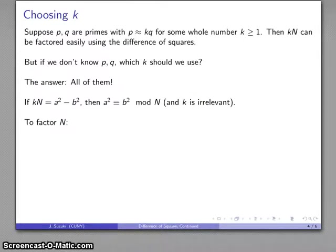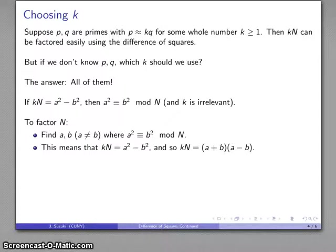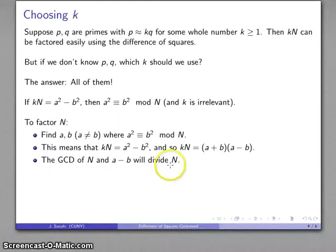So, that suggests the following approach. If I want to factor n, I'm going to find two numbers, a and b, where they're not equal, where their squares are congruent mod n. And, again, what that means is that k times n is the difference of perfect squares. So, k times n factors,